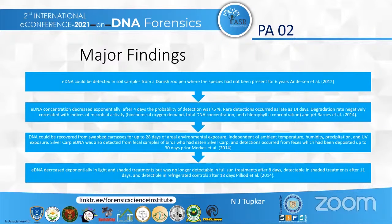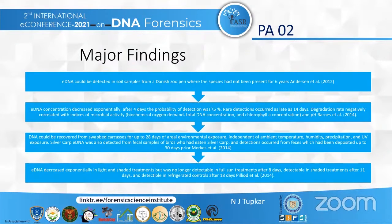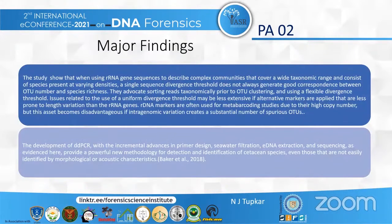Key major findings include that environmental DNA concentration decreases exponentially, with a 5% degradation rate that negatively correlates with microbial activity. Environmental DNA was also found in mucus, skin, hair, and fecal samples. Environmental DNA decreased exponentially in both light and shaded treatments, with no longer detection over time.